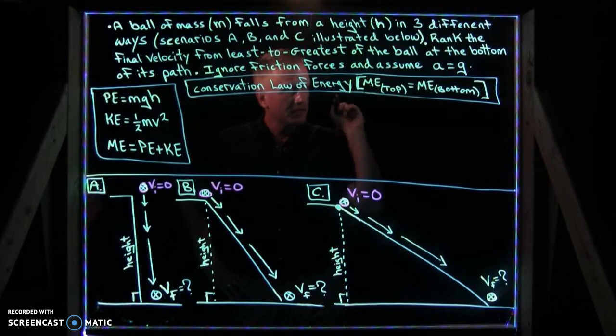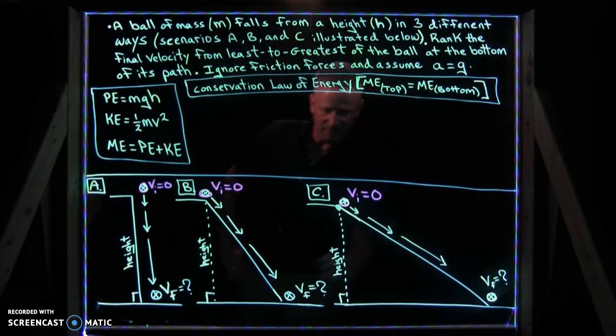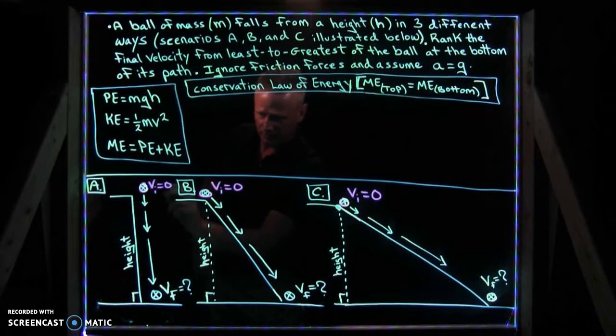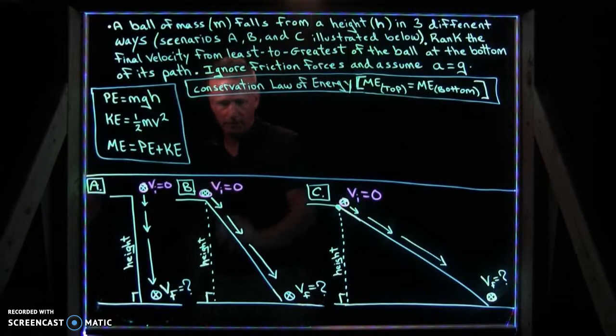Now, think about this problem. Think about different ways you could solve it. Think about how the final velocity might differ if the ball takes different paths to get to the bottom. But in every case, it's always falling from the same vertical height.